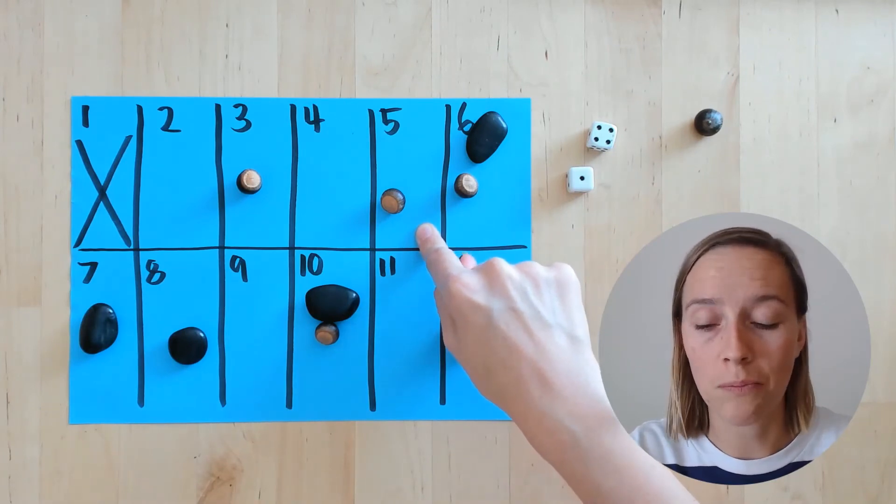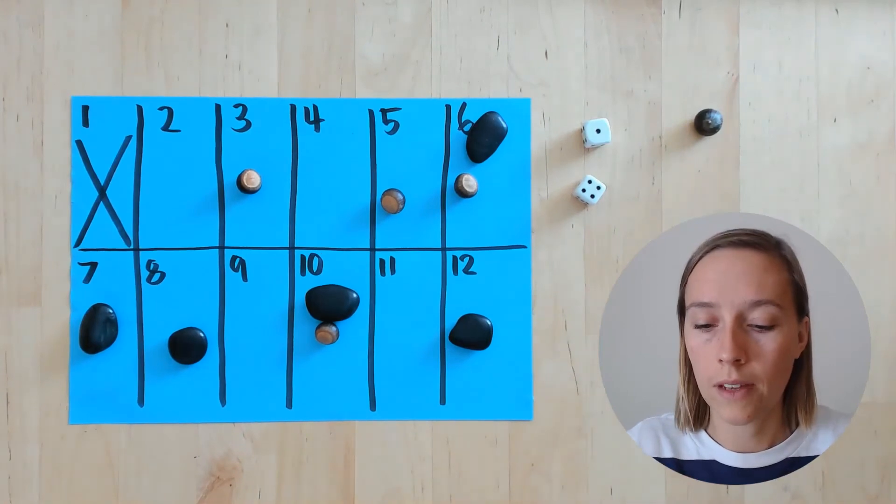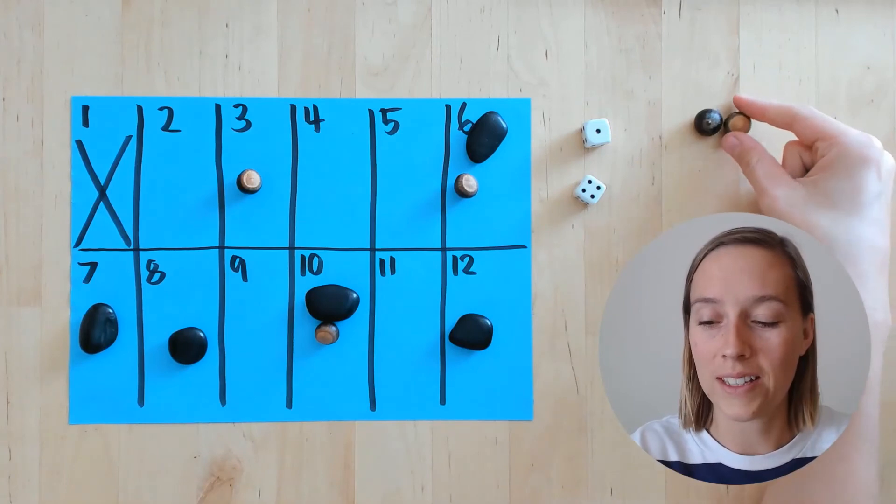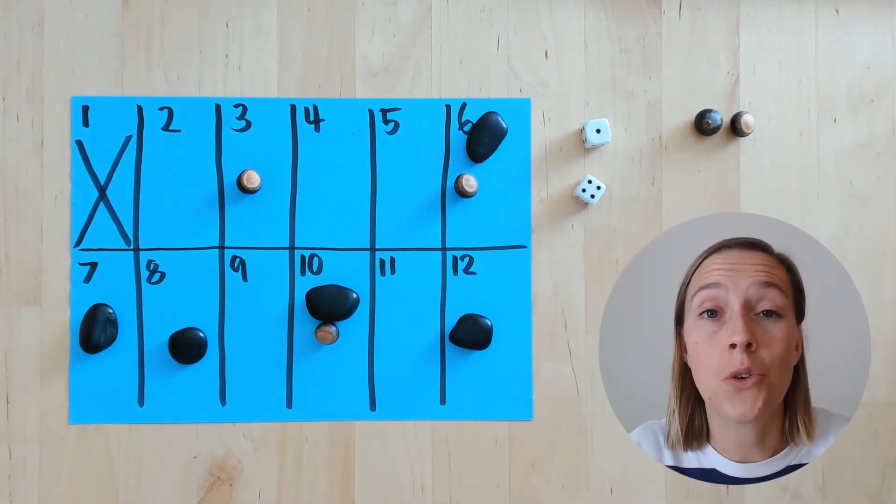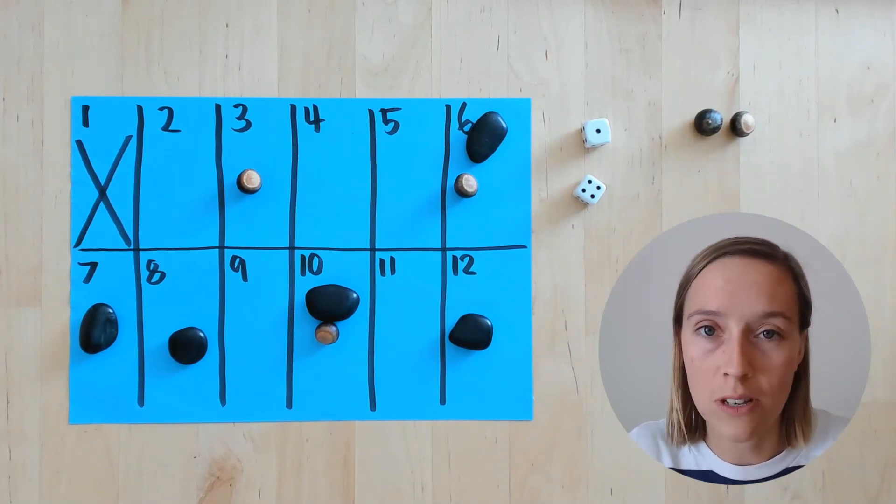Now it's the acorn's turn. One, two, three, four, five. The acorn gets to clear the board. You're going to continue on like that until either the acorn player or the rock player has no more counters on the board.